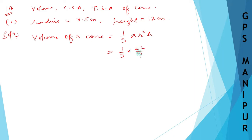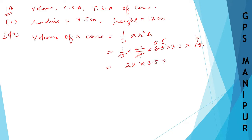Substituting: (1/3) × (22/7) × (3.5)² × 12. We cancel 3 with 12 to get 4, then 7 with 3.5. So we get 22 × 7 = 154. The volume is 154 meter cubed.